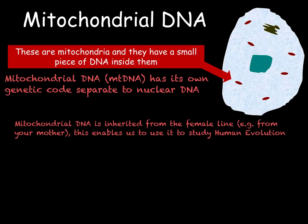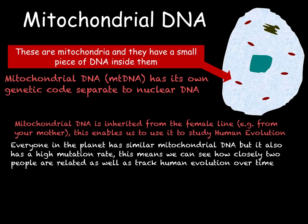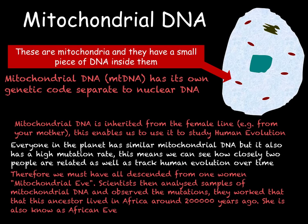From studying mitochondrial DNA, scientists found that everyone on the planet has very similar mitochondrial DNA. However, mitochondrial DNA has a very high mutation rate, meaning we have variation in the species from one person to another. This led scientists to develop a theory that we must have all descended from one woman — scientists called her Mitochondrial Eve. Scientists then went on to analyse the mutations in mitochondrial DNA across a range of people, and found that Mitochondrial Eve would have lived in Africa around 200,000 years ago, so she is also known as African Eve.